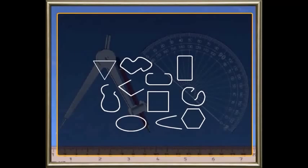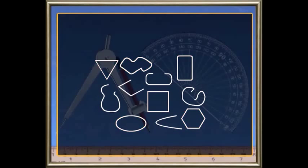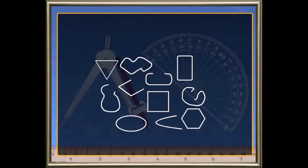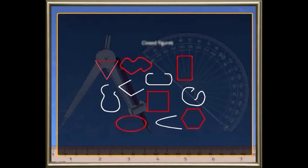Take a look at these figures. You can see that the curved lines do not intersect again at the starting point in few figures, whereas in some, the curved lines intersect forming a closed shape. The figures which do not have intersecting curved lines are called open figures, and the others that intersect and form a shape are called closed figures.